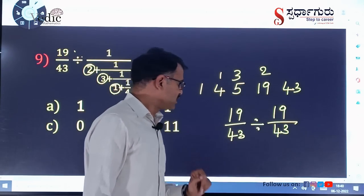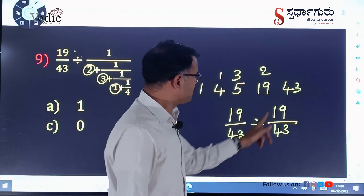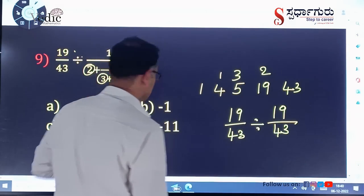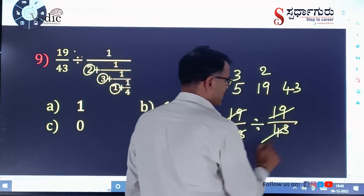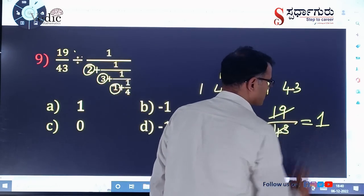See, the question here is 19 divided by 43, divided by 19 by 43. Now we solve. See, 19 and 19 cancel, 43 and 43 cancel. Our answer is 1.